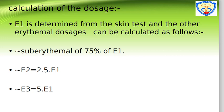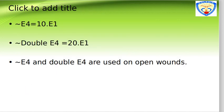For dose calculation: the MED (minimal erythema dose) is determined from a skin test, and other erythema doses are calculated from it. Suberythema dose is 75% of MED. E2 is 2.5 times MED, E3 is 5 times MED, E4 is 10 times MED, and double E4 is 20 times MED. E4 and double E4 are used on open wounds.